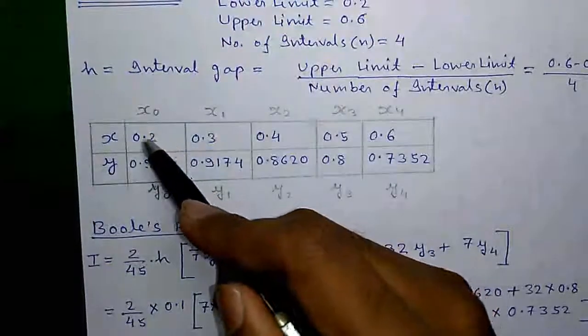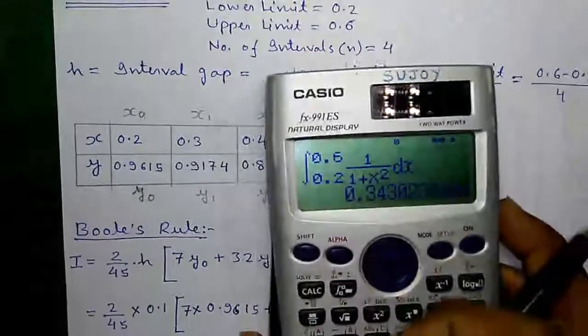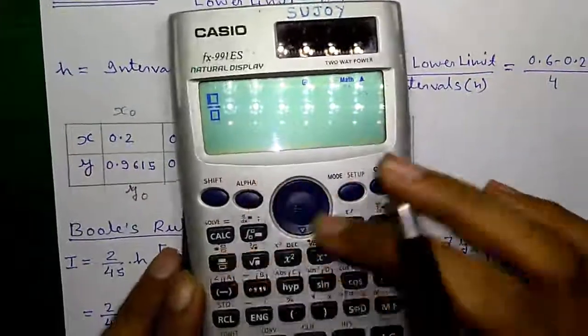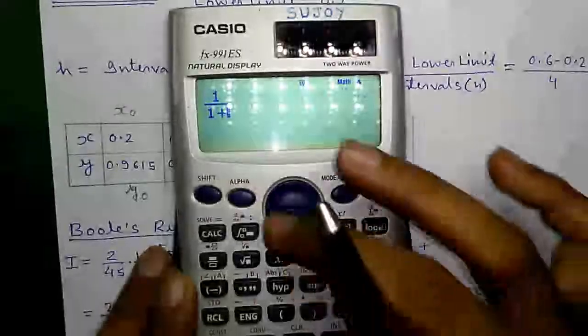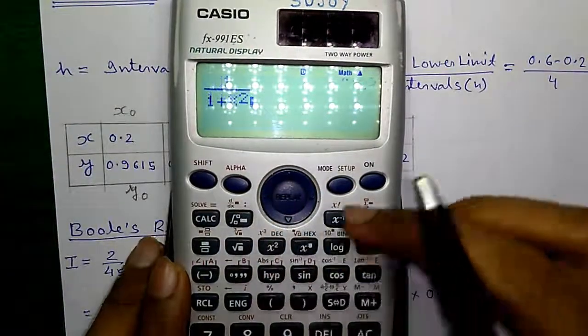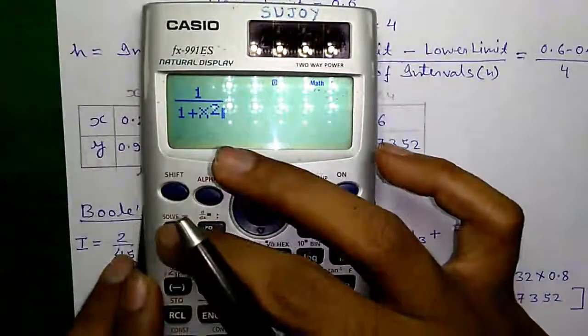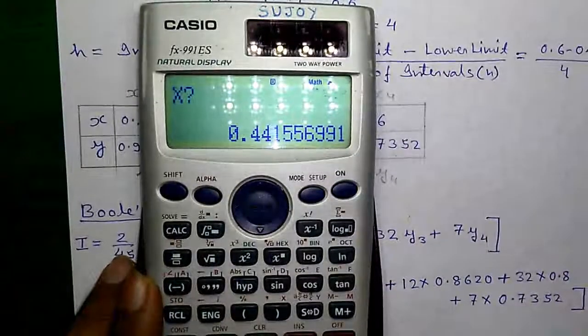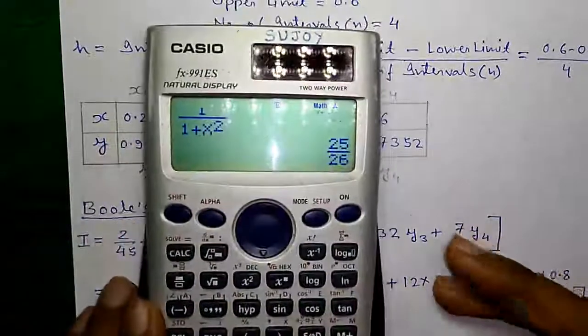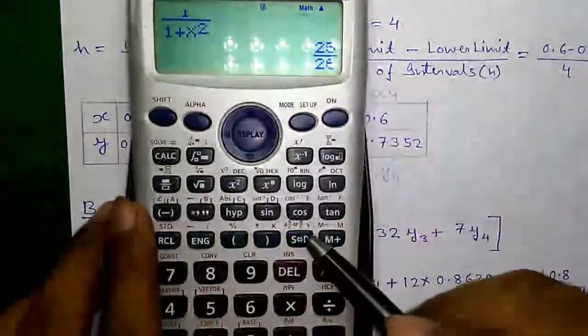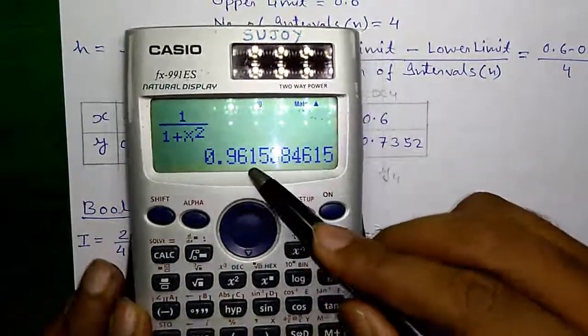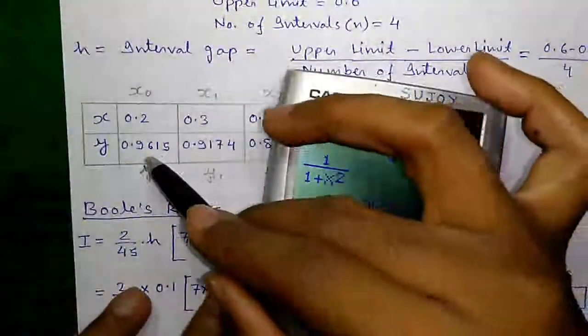By putting x equals 0.2 into the expression 1 divided by 1 plus alpha and this button for x and this button for square, press calc, then the value of x which is 0.2, and press equals to: 0.9615, which is this value.